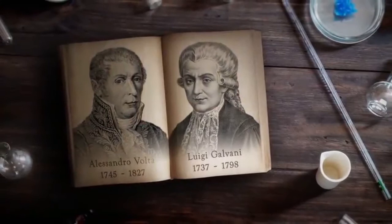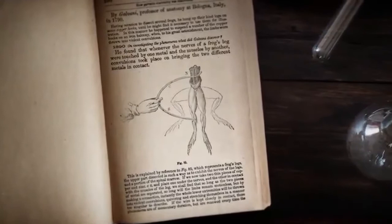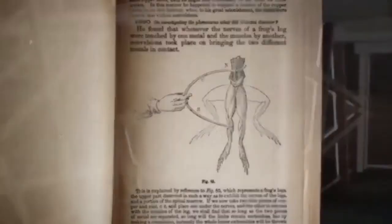Galvani had placed the legs of recently dissected frogs on brass hooks for observation. Galvani noticed that when he touched the brass hook with a probe made of a different metal, the legs twitched. Galvani knew that electrical impulses were associated with muscle contraction. His conclusion was that he had tapped a new form of electricity, one generated by the muscles in the frogs' legs themselves.